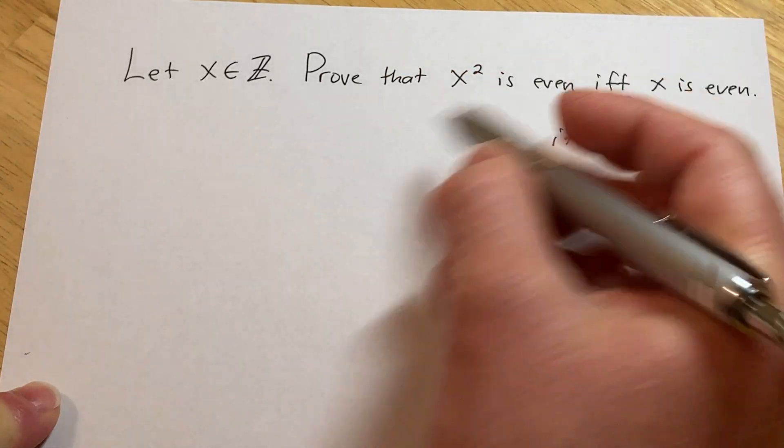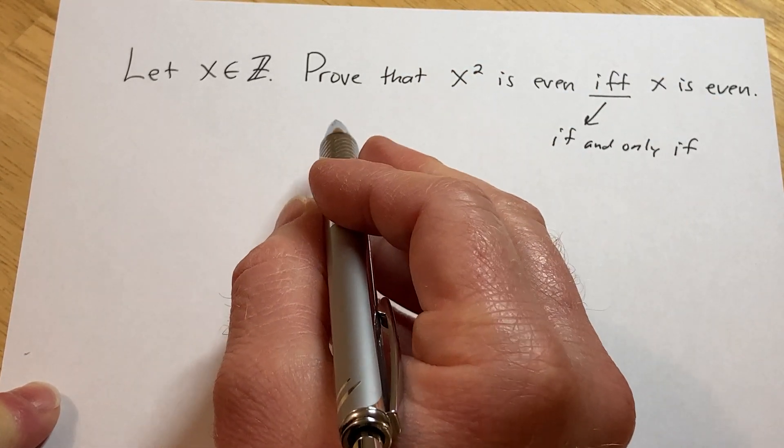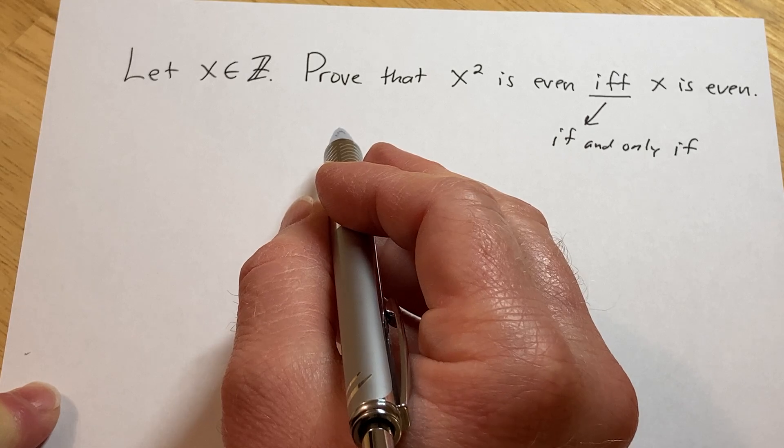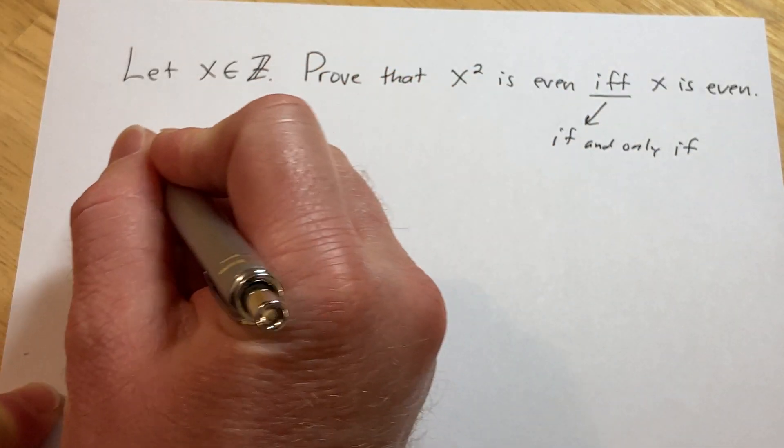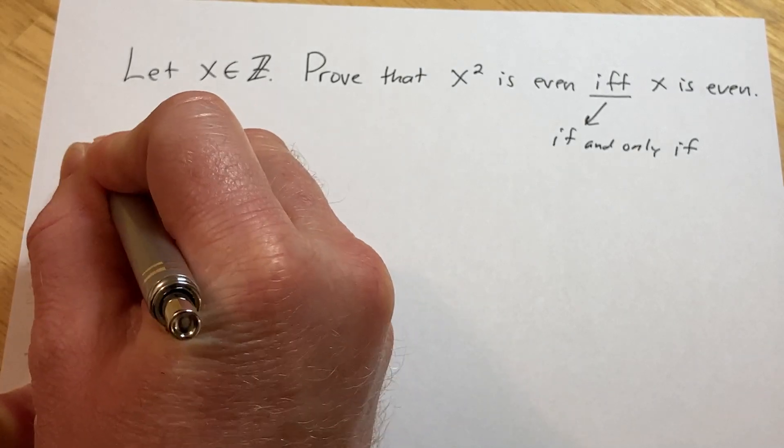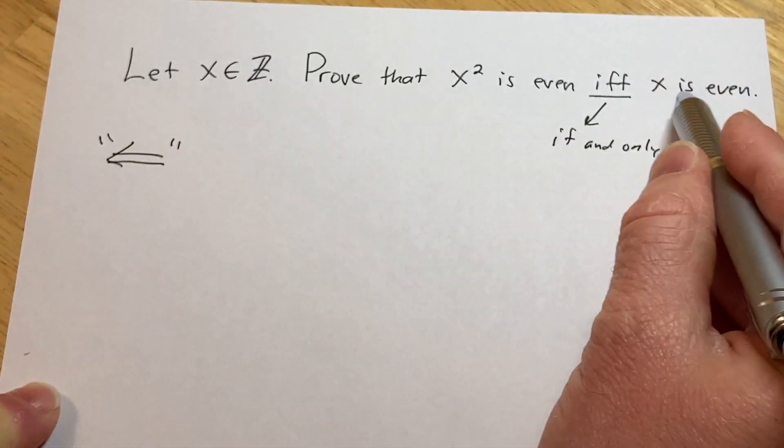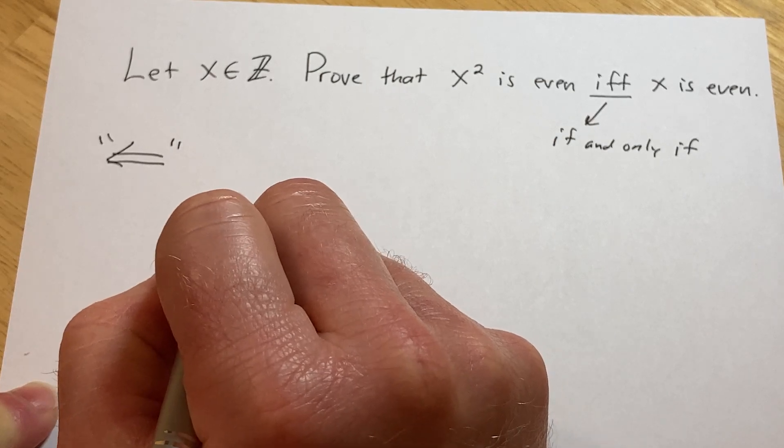So we basically have two directions to prove. So let's start by proving if x is even, then x squared is even. So we're going to prove this direction here. So we assume x is even, then we show x squared is even.